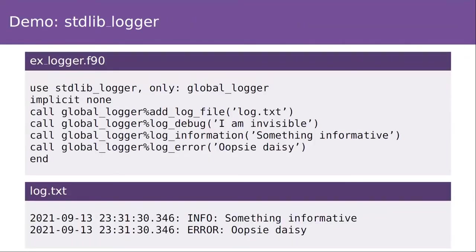The first example is a demonstration of the standard logger module. This is a module which defines a derived type for logging messages to a file. It's a simple and common need — if you decide you need some kind of logging, you end up rolling it yourself. Stdlib is now stepping in and saying, here's one that's ready-made and highly configurable. It's got options to control which file or multiple files a logger should write to, how to format timestamps, which types of messages you want to log, and lots more. For very basic needs like what's shown here, it's good enough to use a predefined global logger instance — a module-level variable that for many simple applications gives you what you need with minimal setup.